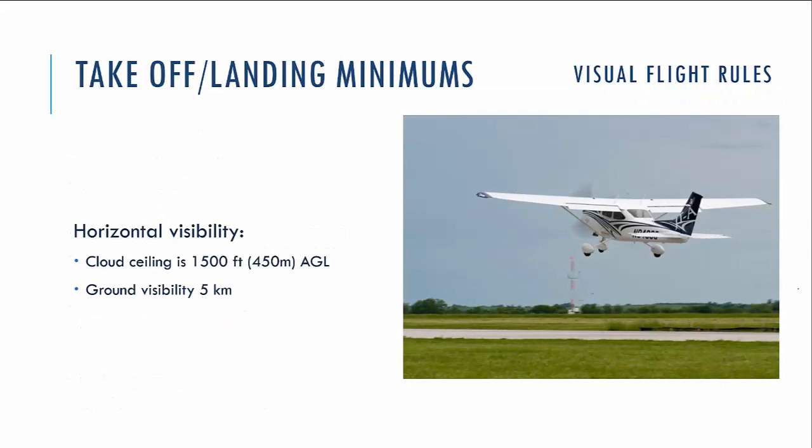Now let's talk briefly about takeoff and landing minimums. You can take off and land at your aerodrome if meteorological conditions comply with the following minimums: cloud ceiling not less than 1500 feet above ground level, and ground visibility in the vicinity of the aerodrome not less than 5 kilometers.